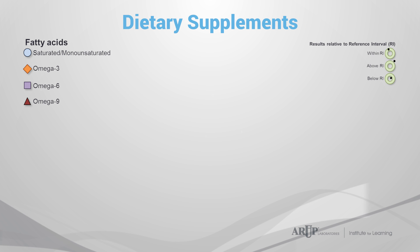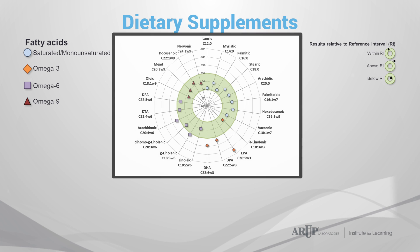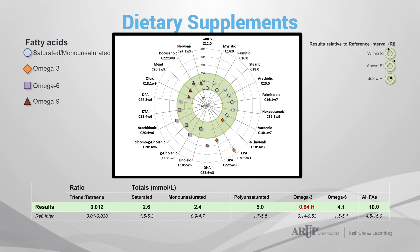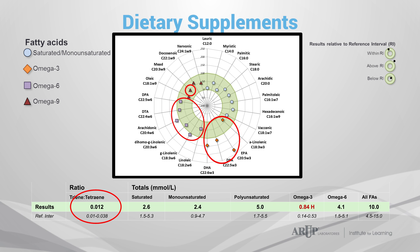The results of the second sample, collected from the same patient two weeks later, show normal to mildly elevated levels of omega-3 and omega-6 fatty acids, reflecting supplementation. The concentration of mead acid and the triene:tetraene ratio return to normal, demonstrating their sensitivity to dietary treatment.